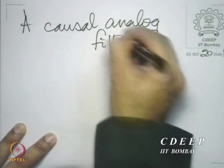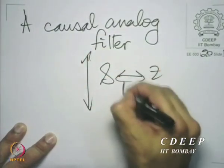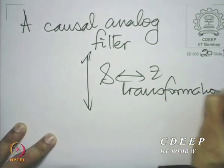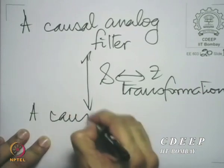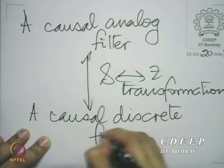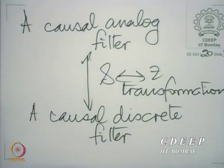We have assumed the filter to be causal. We take a causal analog filter and apply this S-to-Z transformation. A causal analog filter must move into a causal discrete time filter. Now if the discrete filter is causal, we know what to expect from its poles. We are assuming the discrete filter is causal; we want it to be rational because it should be realizable. For a causal rational discrete time system, if it is to be stable, the poles must lie inside the unit circle — they have no choice.